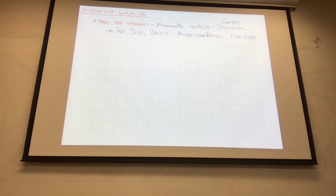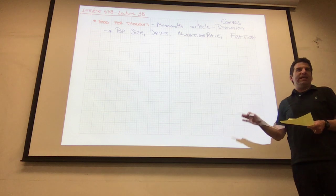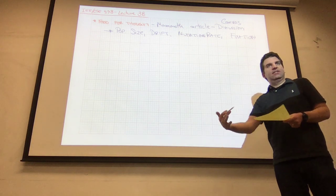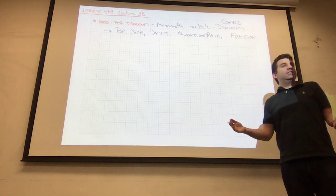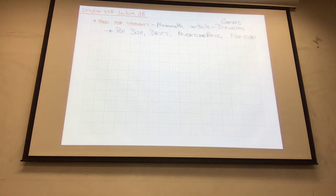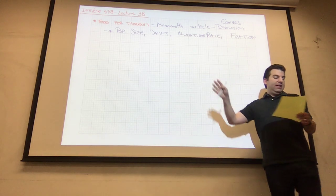This shows how important diversity is. When we get to multi-objective genetic algorithms, diversity is even more important. Any mechanism to maintain diversity is going to be critical as we move into multi-objective spaces.